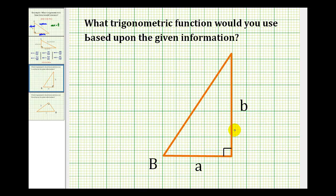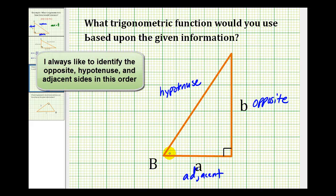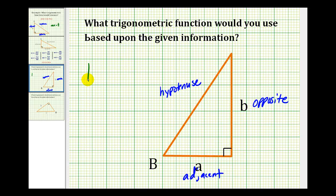Here's another example of the same type. We want to determine what trig function we would use based upon the given information. If we're referring to angle B, side B would be the opposite side. The hypotenuse is opposite the right angle and is also the longest side of the triangle. Side A would be the adjacent side. So using angle B, we want a trig function that involves the length of the opposite side and the length of the adjacent side — and that would be the tangent function. So the tangent of angle B is equal to the ratio of B to A.